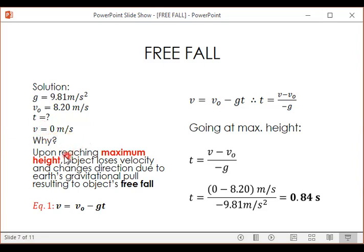Why is it 0? Because upon reaching maximum height, the object loses velocity and changes direction due to Earth's gravitational pull, resulting in the object's freefall.